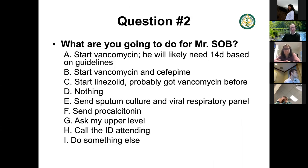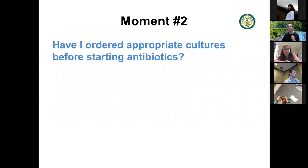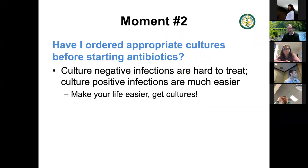Moving to question number two. Mr. SOB with bilateral pneumonia, positive rhinovirus, and a smattering of everything else — what do you do? Start vancomycin, vanc-cefepime because it started in the ED? Linezolid? Nothing? Send sputum cultures and viral respiratory panel? Call the ID consult? That brings us to moment two: have I ordered the appropriate cultures before starting antibiotics? This is my biggest thing in ID. Culture-negative infections are incredibly hard to treat. I have no idea what they are. Culture-positive infections are much easier — make your life easier, get the cultures.